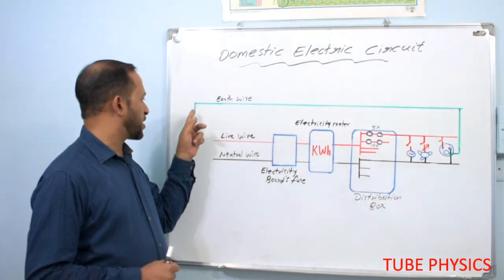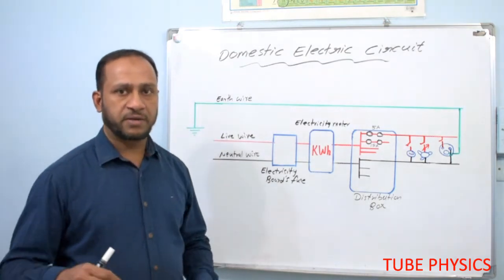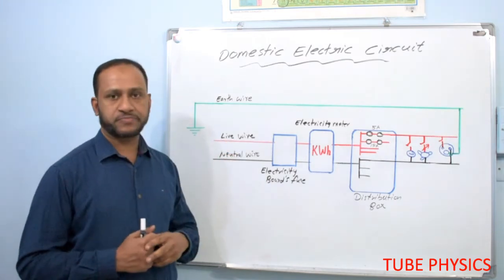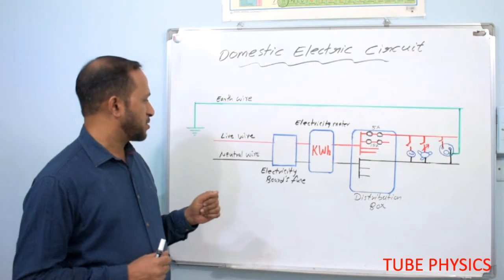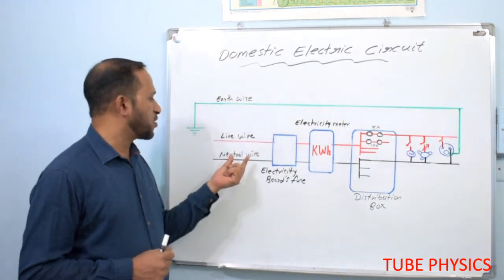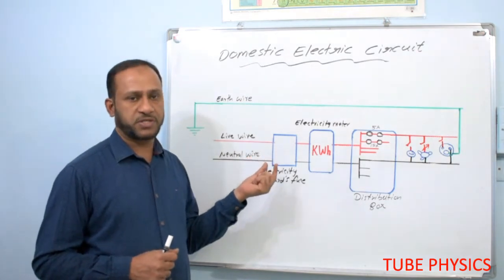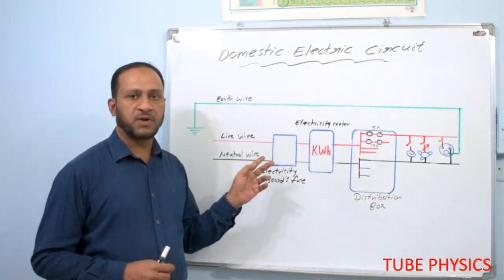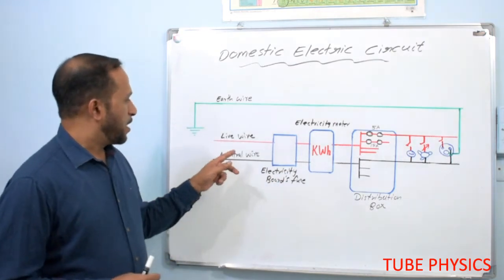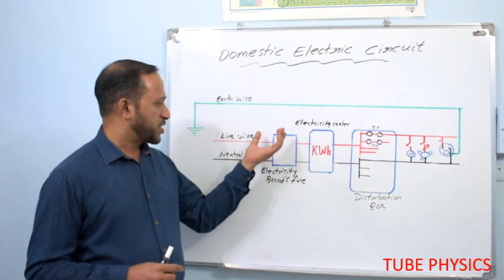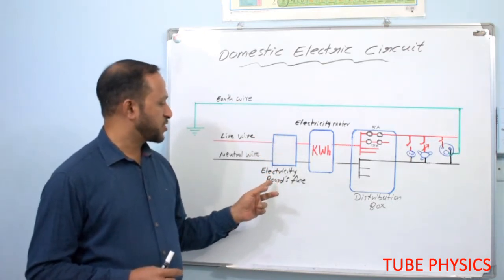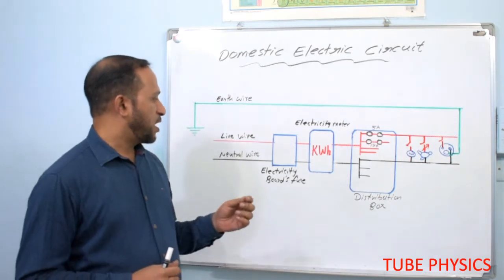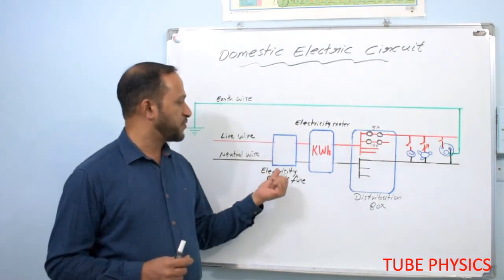One end of the earth wire will be connected to the earth by using a long metallic rod. The electricity department provides us the live wire and the neutral wire. The live wire and neutral wire, in the beginning of the circuit connection, will be connected to the electricity board fuse and electricity meter. These two are connected by the department of electricity, and they are the only ones supposed to operate them.